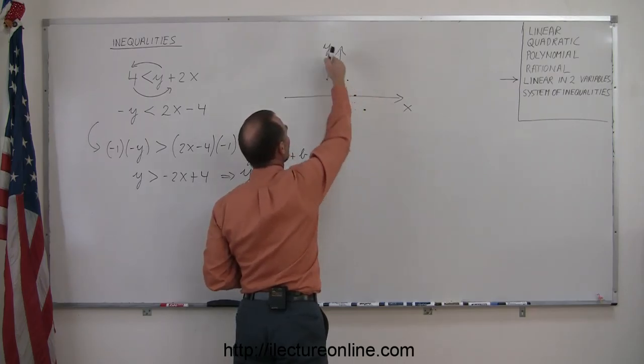Which means the point that I chose lies in the region that does not satisfy the inequality, which means the other side does. And so let's shade in the side that does. And there you go. We have a graphical representation of the region that satisfies this inequality. In other words, any point in this region plugged into the inequality will make that a true statement. And any point on the line will not.